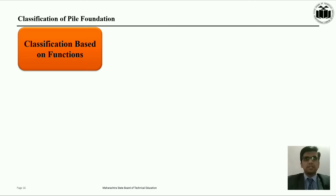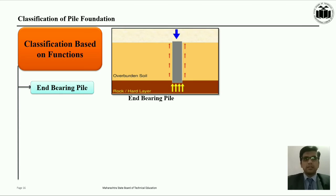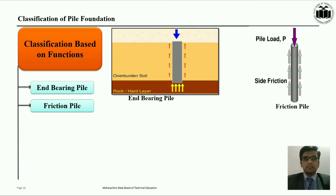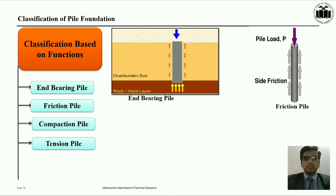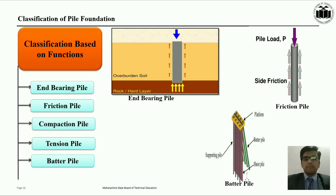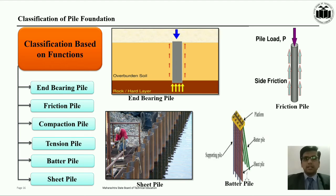The pile foundation based on function can be classified as: end bearing pile — the end bearing pile carries the load of structure up to the hard and firm strata below ground; friction pile — the friction pile carries the load through skin friction; compaction pile — which is used for densification of loose granular soil; tension pile — which is used to resist the uplift pressure in structures; batter pile — generally provided at an inclination with the vertical; and sheet pile — generally used as a retaining structure in ground as well as in water bodies.